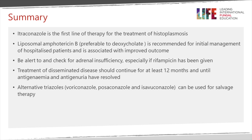In conclusion, itraconazole is the first-line therapy for all patients except those who are critically ill or highly immunocompromised. Liposomal amphotericin B is second-line, or first-line if patients are very ill, and is preferable to deoxycholate amphotericin B — it definitively improves outcome and survival. Be alert and check for adrenal insufficiency, particularly if rifampicin has been given. Treatment of disseminated disease should be for at least 12 months, and preferably until antigenemia and antigenuria have disappeared. If itraconazole cannot be used, the other azoles — voriconazole, posaconazole, or isavuconazole — may be effective, but preferably not fluconazole, which has a 25 to 30% lower response rate than itraconazole.